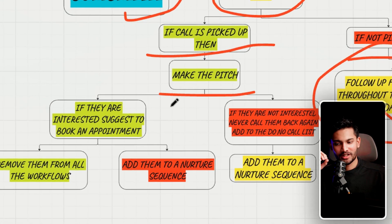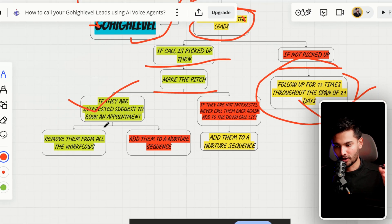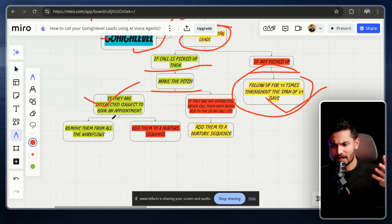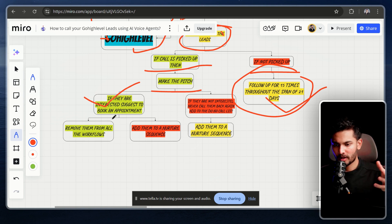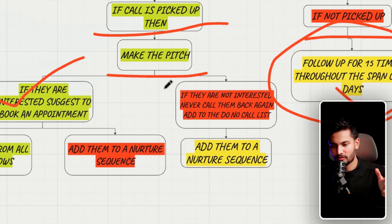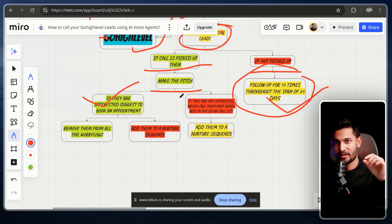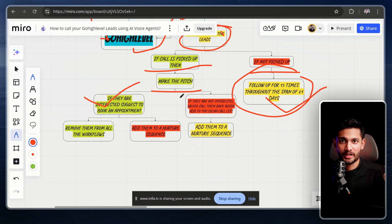If they don't pick up, we follow up with them 15 times over 21 days. If they do pick up, the AI agent makes the pitch, tries to book an appointment, and asks things like 'I saw you clicked our ad — would you like to book an appointment or do you have any questions?'